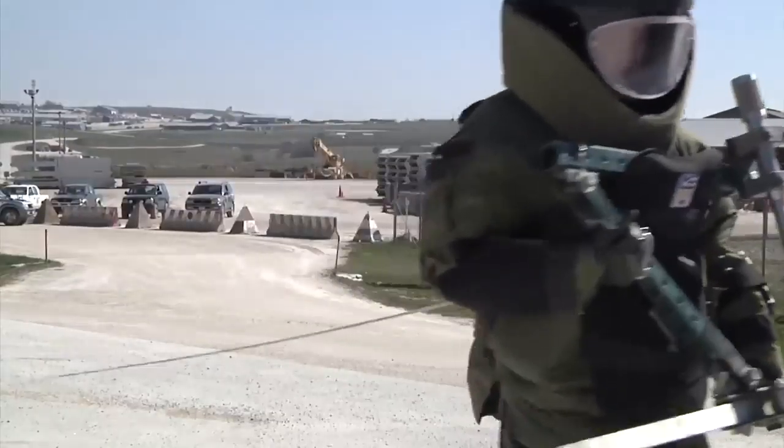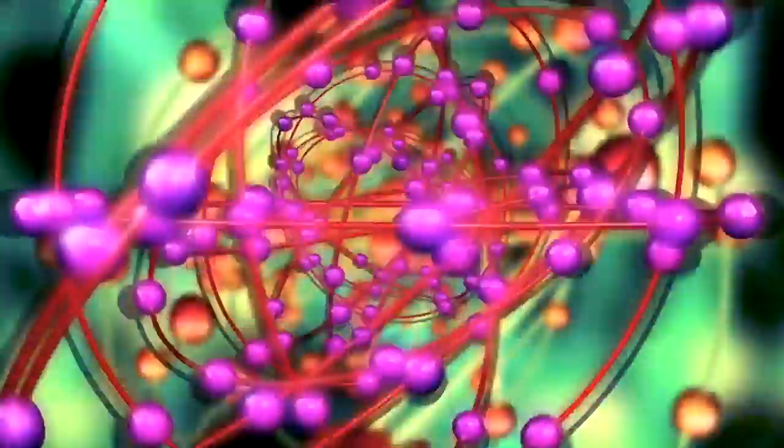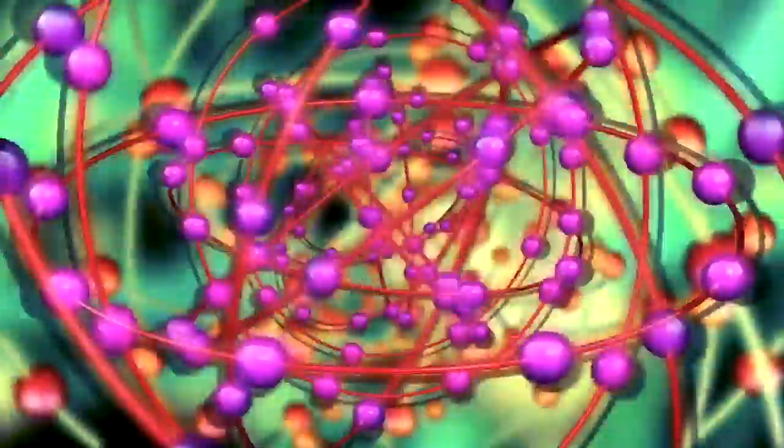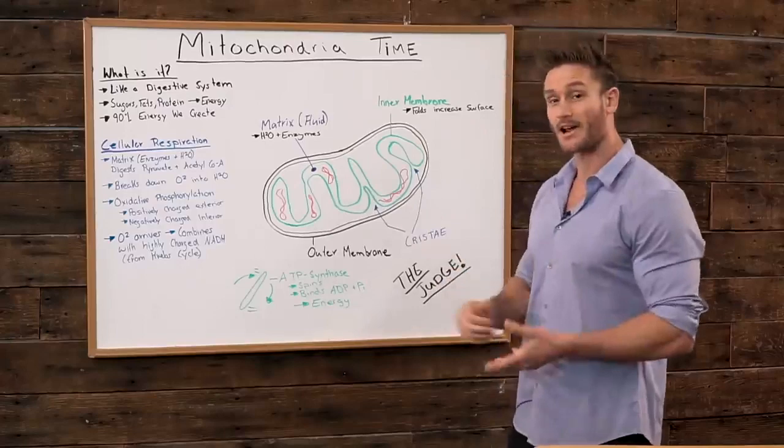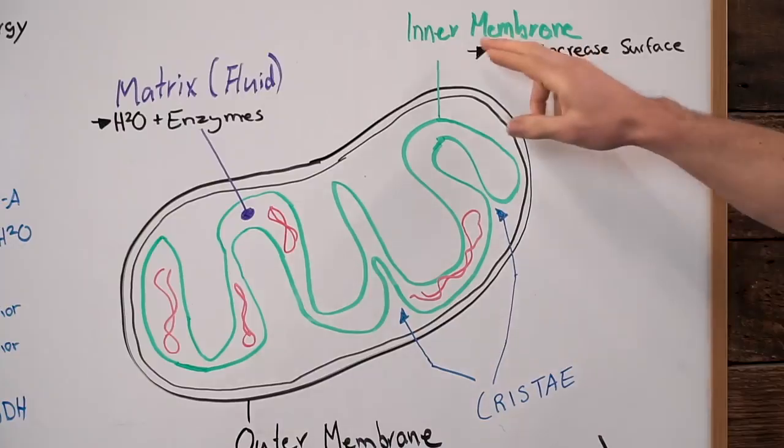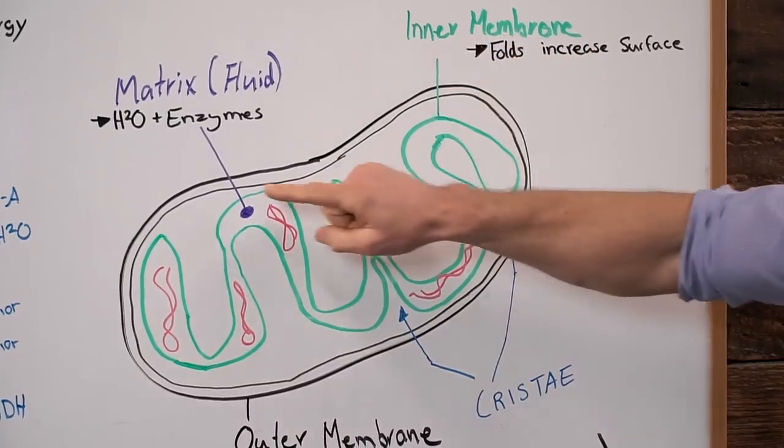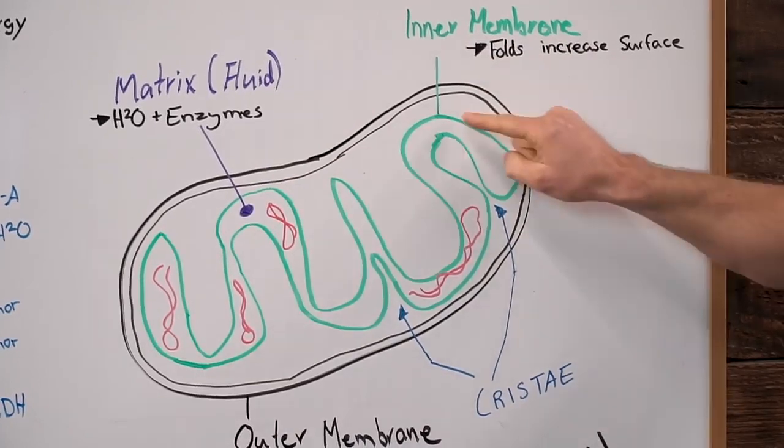It's protecting it and also allowing different electrons to come in and out, creating this gradient between positively charged electrons and negatively charged electrons. But then what makes mitochondria extremely unique is this inner membrane. Outer membrane here, inner membrane here.